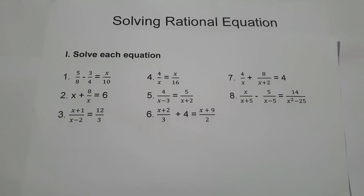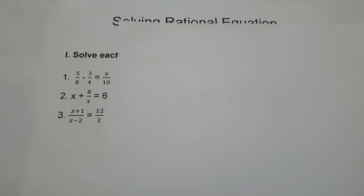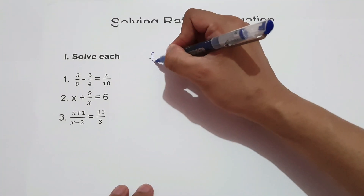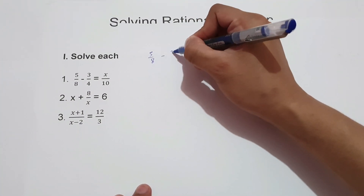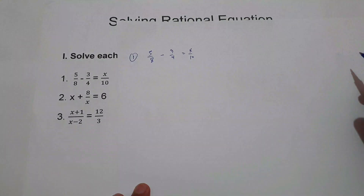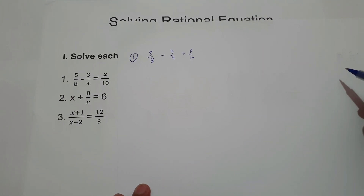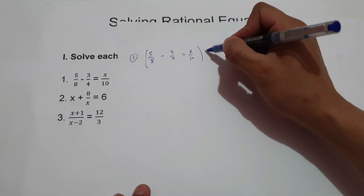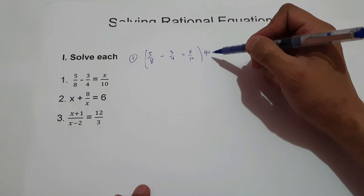To start with number 1, we have 5 over 8 minus 3 fourths equals x over 10. How do we find the value of x in this rational equation? The first thing we're going to do is eliminate the denominators 8, 4, and 10. To do that, we're going to multiply the whole equation by 40, or the least common multiple.